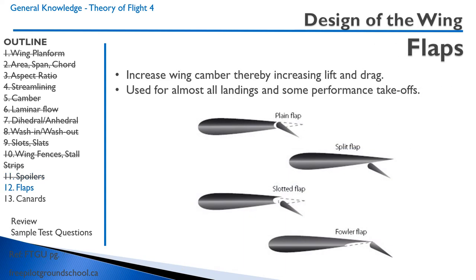Wing flaps are an important topic. Most light aircraft have wing flaps, which operate by increasing the wing camber, thereby increasing both lift and drag. There are several types: plain flaps, split flaps, slotted flaps, and Fowler flaps. Cessna aircraft have Fowler flaps, where the wing area is also increased because the flap comes out and down. For a maximum performance takeoff, you would only use flaps on aircraft with sufficient power to overcome that drag penalty.